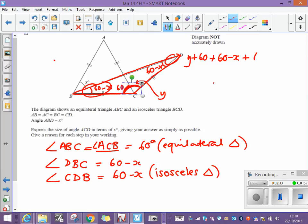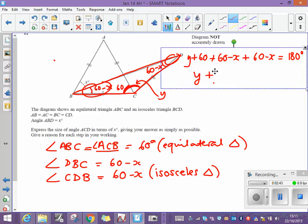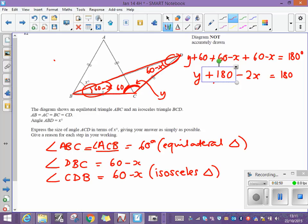those three angles must add up to 180 degrees. Now if I simplify the left-hand side, I've got y plus 180 minus 2x is equal to 180. And I can see now that if I subtract 180 from the left side and I subtract 180 from the right side,